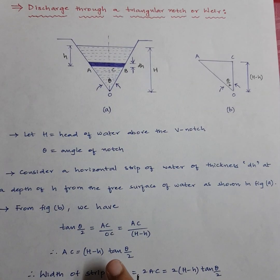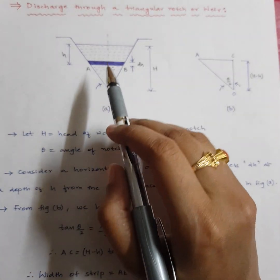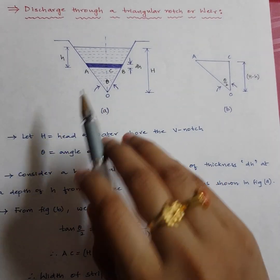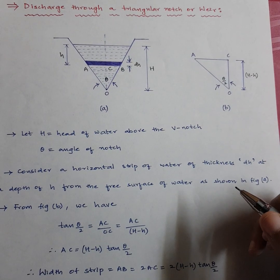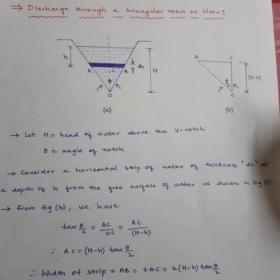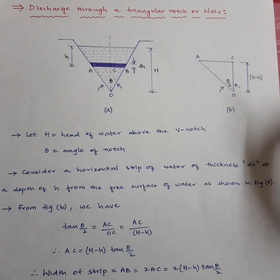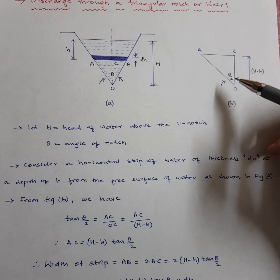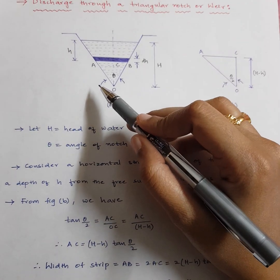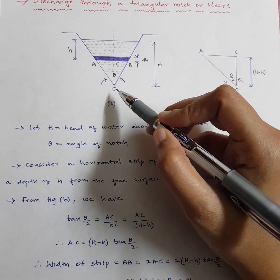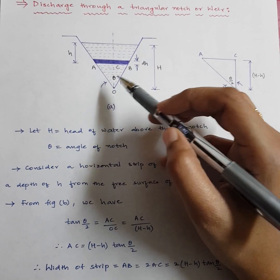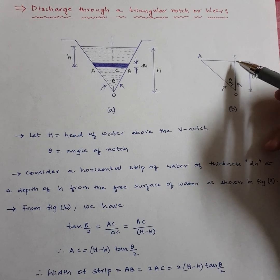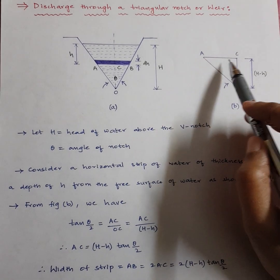From figure B, the triangle ACO is a right-angle triangle. From this, tan(theta/2) equals opposite side AC divided by adjacent side OC. The angle is theta/2 because the total angle is theta, and the center line divides it equally — theta/2 on each side.